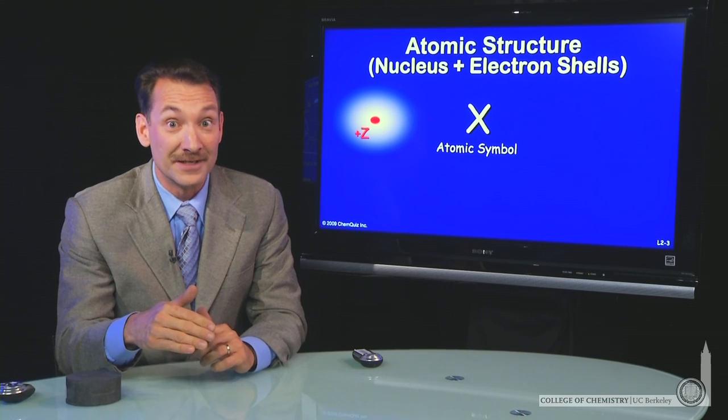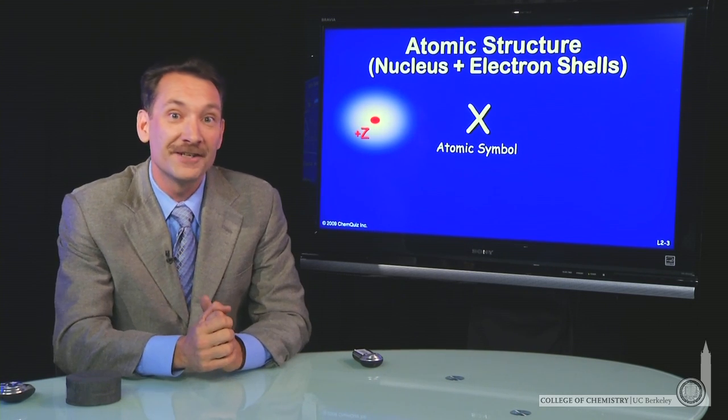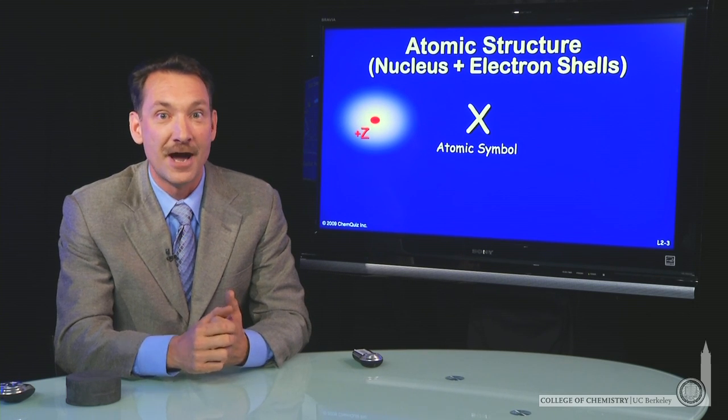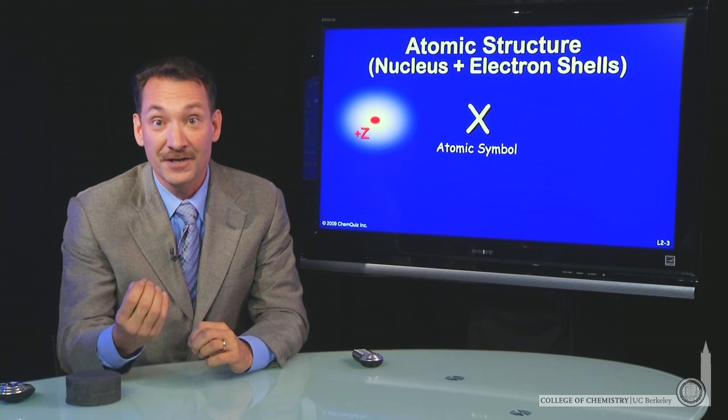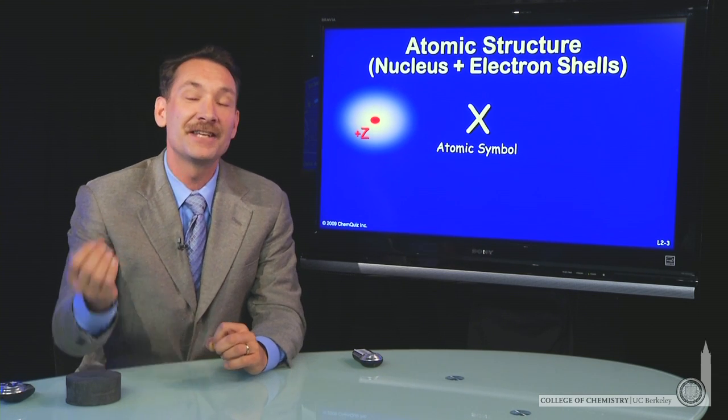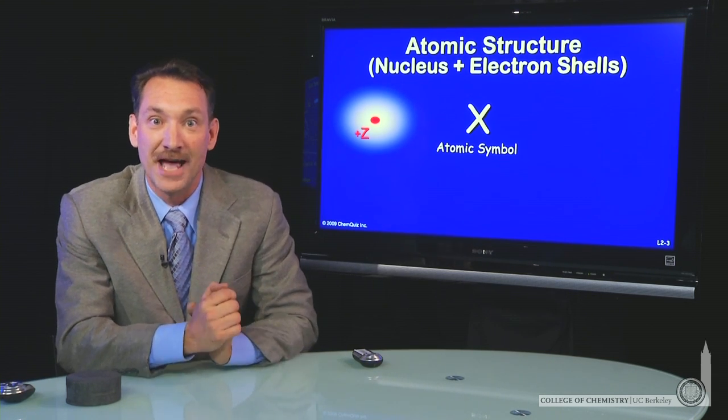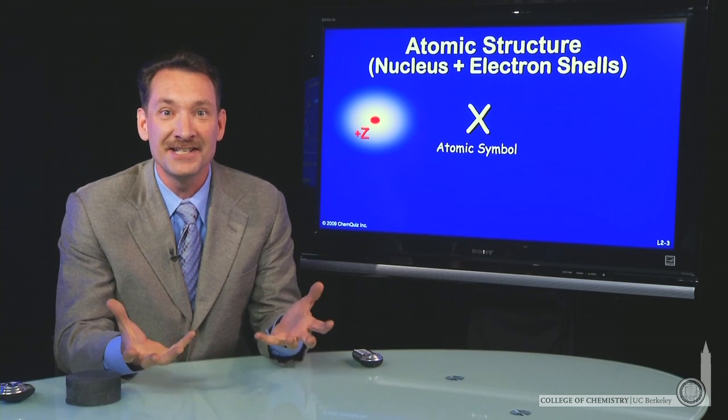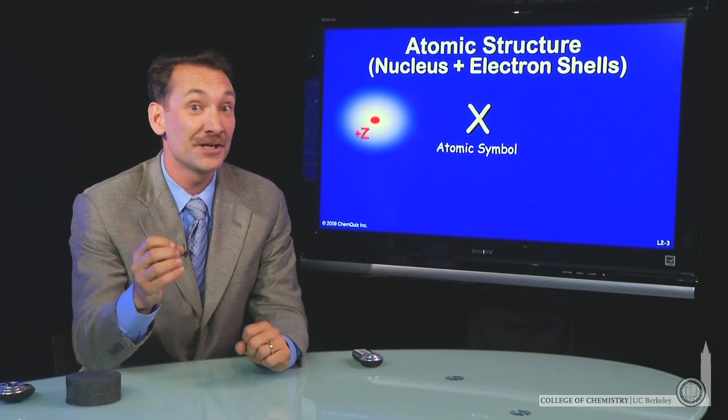So what else is in the nucleus then? Well, nuclei often contain neutrons. Now, neutrons are not charged, as their name implies. They're neutral particles. They simply add to the mass of the atom, but they don't change the identity of the element. And that's very interesting.